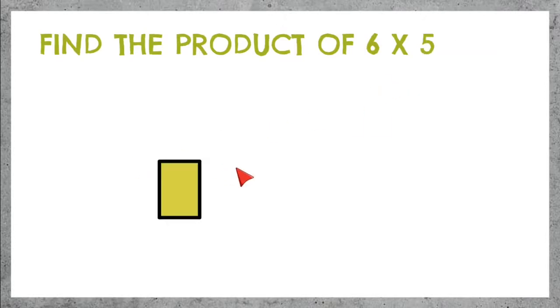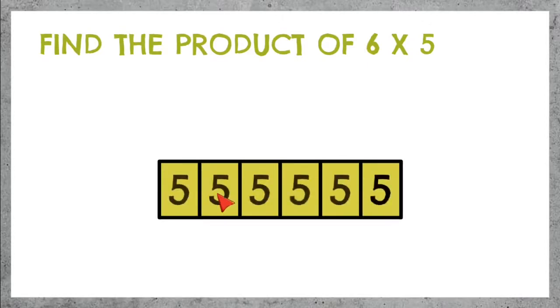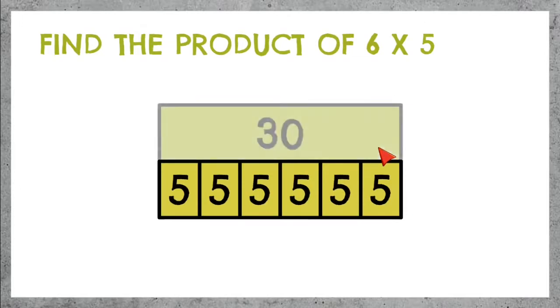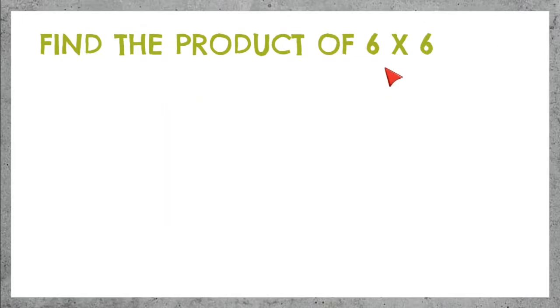6 times 5 means 6 parts with 5 inside of each part. If we add this up, we get 30. 6 times 5 equals 30.